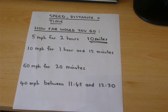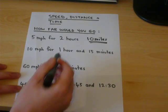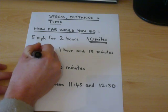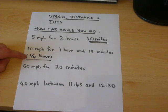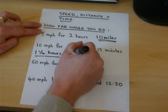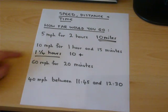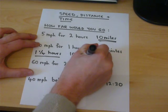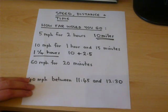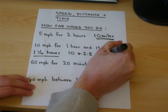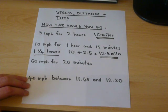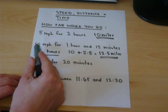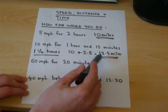Suppose instead you're told he travels 10 miles an hour for 1 hour and 15 minutes. Well, 1 hour and 15 minutes is 1 and a quarter hours. So in the first hour he will travel 10 miles, but in a quarter of an hour he will only travel a quarter of 10 miles, which is 2.5 miles. So in total he will travel 12.5 miles. The trick here is to be aware that 15 minutes is a quarter of an hour, and a quarter of 10 is 2.5, giving a total of 12.5 miles.